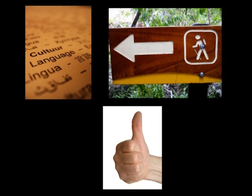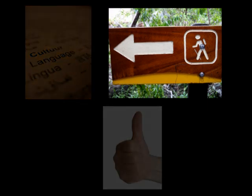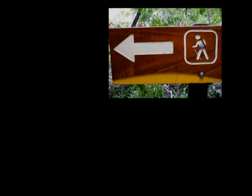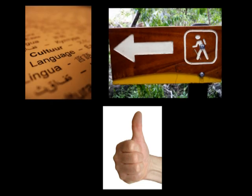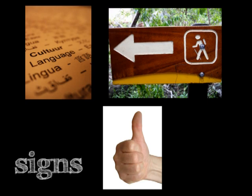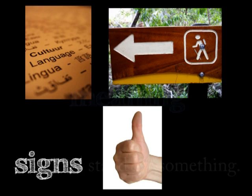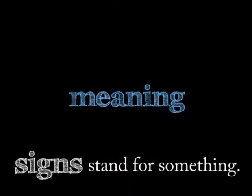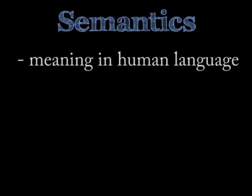They all have some on-the-surface symbolic feature — something that they are, like a painted sign with a specific pattern, a sequence of letters, an arm with fingers held in a certain way. But we also take them all to stand for something else. Meaning is what makes this possible. To use the traditional term, we could call all of these signs — and we'd say that all of these signs stand for something. We call this relationship meaning.